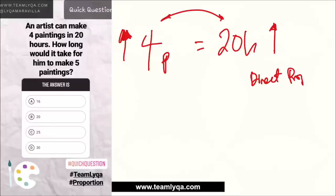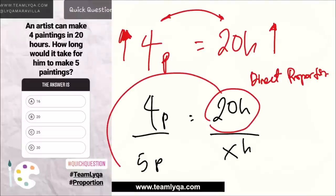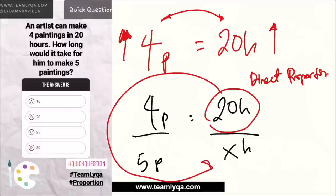So ibig sabihin, yung side ng hours tataas din siya. At kaya, pag pareho silang tataas — which I explained in the full video lesson — this will be a direct proportion. At kung direct proportion siya, all we have to do, instead of finding yung rate pa or anything like that like a formula, ang suggestion ko would be ratio rotation lang. So: 4 paintings in 20 hours — kung 5 paintings, ilang hours ngayon? This will be your x. And all we have to do is iikot lang natin siya. 20 divided by 4 is 5, times 5 — that will be 25 hours.